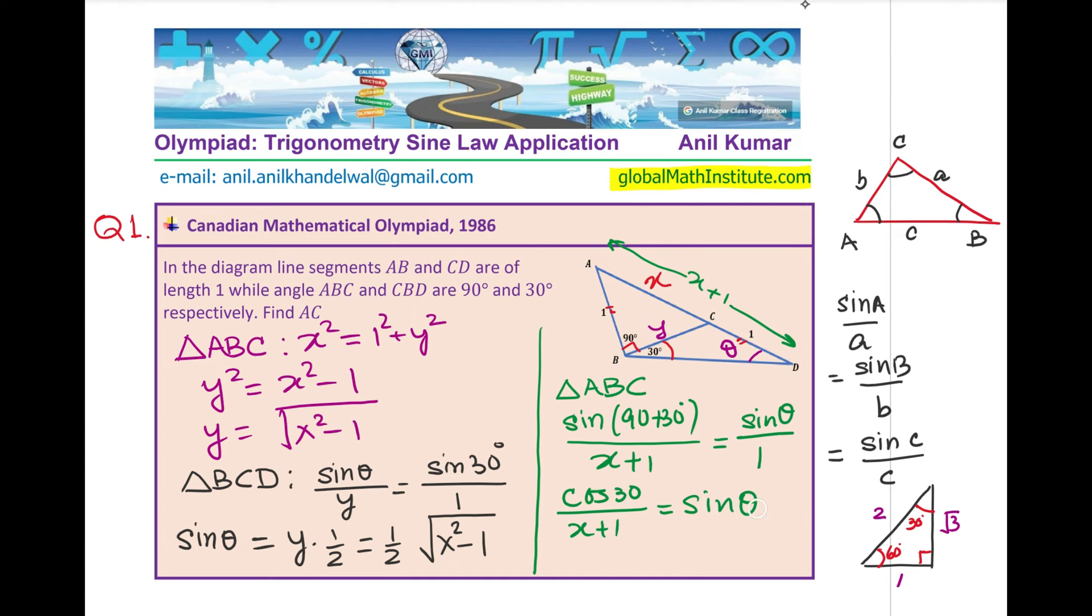Sin 30, as you know, is square root 3 over 2. So, we could write this as square root 3 over 2 times 1 over X plus 1 is equal to sin theta. So, as you can now see that we have the value of sin theta as half of square root X squared minus 1 and square root 3 by 2 of 1 over X plus 1. So, both sin theta values can be equated. You get the idea.